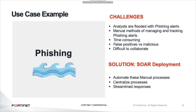With a phishing investigation playbook, the initial investigation steps can be taken automatically as soon as the phishing email is reported. This way, analysts will only be alerted to those emails which the playbook determines are suspicious. Once the analyst confirms that a reported email warrants further action, the playbook can continue, taking care of the additional SIEM queries, deleting the email from all user inboxes, and sending an email to all recipients alerting them of the action taken and providing helpful tips on what to do when they receive a similar phishing message in the future.